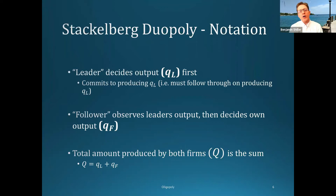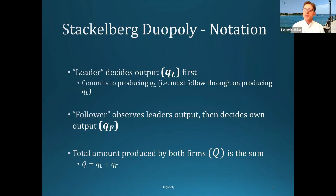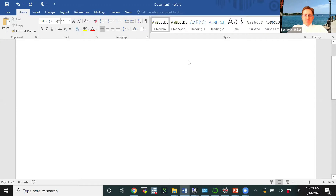The way we're going to solve this problem is: first, we're going to derive a function called the reaction function for the follower, that tells us how much the follower is going to produce as a function of how much the leader produces. For any amount the leader produces, the follower can figure out what quantity it wants to produce in response to maximize its profits. Finding the follower's reaction function is the first step of solving this problem.